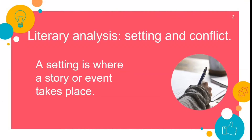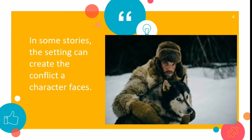Lesson Objectives: Literary Analysis — we're going to review the setting and conflict. Reading Strategy — Predict. Introduction to the story To Build a Fire. A setting is where a story or event takes place. Authors can describe a setting to include geographic location, time, weather, and environment. In some stories the setting can create the conflict of a character, and it can even act as the antagonist or opponent of the main character.